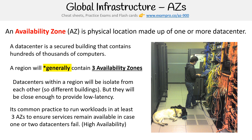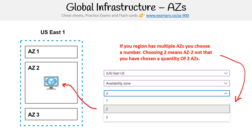It's common practice to run workloads in at least three AZs. That's important to ensure services remain available in case one or two data centers fail. This is called high availability, and we'll definitely cover this concept again in this course.